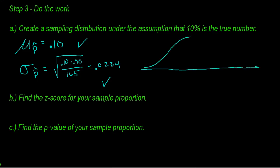We know that samples vary. The standard deviation of the sampling distribution is the square root of 0.10 times 0.90 divided by my sample size of 165. I get 0.0234. So I got the center, I got the spread, now I just need a picture of the shape.